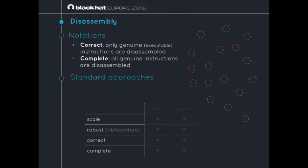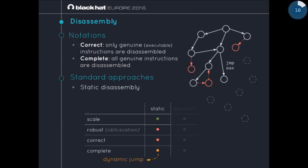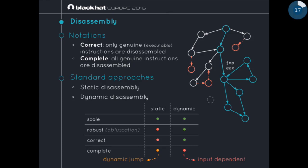A quick recall about disassembly: we consider a disassembly correct if it only disassembles genuine executable instructions. We call it complete if it manages to disassemble all instructions. With a static approach, you're meant to disassemble the whole program, but you can be fooled into disassembling dead data bytes or dead branches, and you're blocked by all dynamic jumps. The analyses scale but are not robust to many obfuscations like self-modification. On the other hand, dynamic disassembly disassembles a subset of the program, but we assure it to be executable, and it's robust to self-modification.